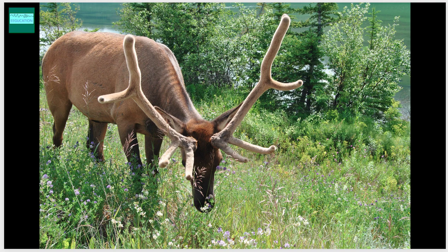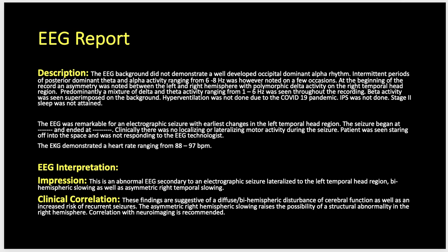Let's put together the report for this EEG. In the description: the EEG background did not demonstrate a well-developed occipital alpha rhythm. Intermittent periods of posterior dominant theta and alpha activity ranging from 6 to 8 hertz were noted on a few occasions as pointed out on the first page. At the beginning of the record, an asymmetry was noted between the left and right hemisphere with polymorphic delta activity in the right temporal head region. A mixture of delta and theta activity ranging from 1 to 6 hertz was seen throughout the recording. Beta activity was seen superimposed on the background at the start of the EEG and after the electrographic seizure.